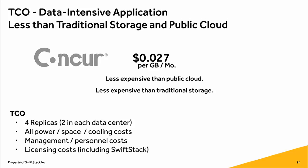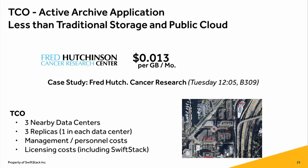For an active archive example, Fred Hutchinson is presenting tomorrow at 12:05. Their costs ended up being really compelling — they have really low-cost power because they're in the northwest. They did three data centers on the same campus with three replicas.